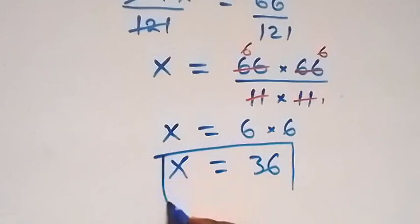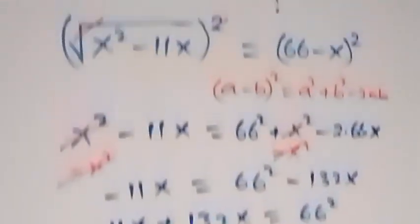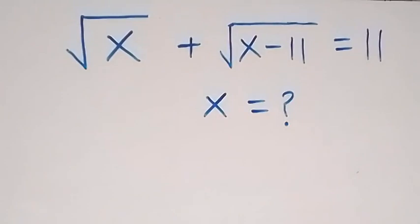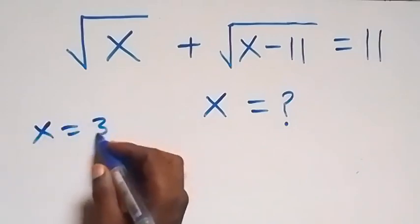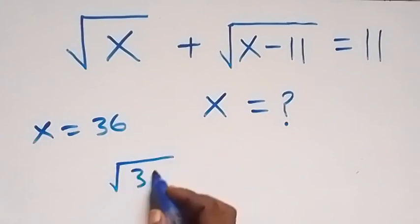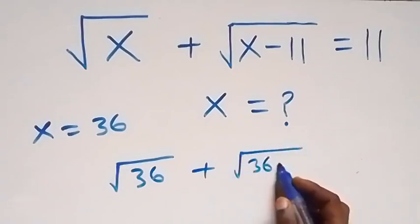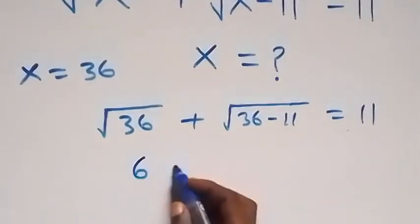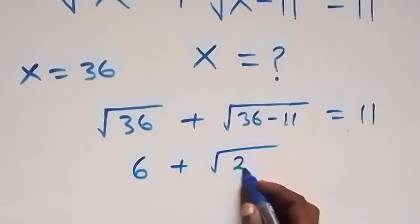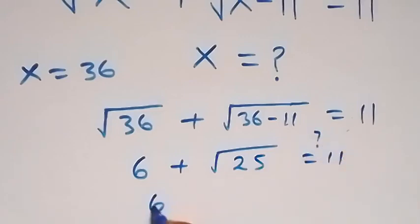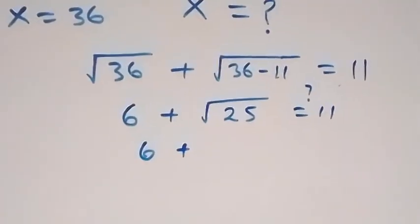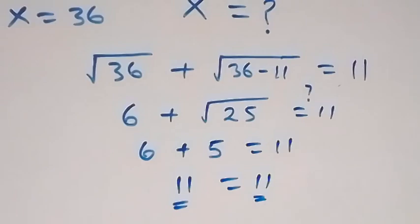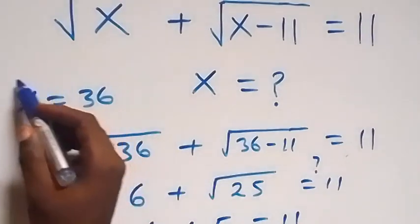Now we have the value of x for this given problem. Then we can check from what is given quickly to see if this satisfies the given problem. Since we got x equals to 36, we have square root of 36 plus square root of 36 minus 11. That gives us 6 plus square root of 25, which is 6 plus 5, equals to 11. Left hand side equals to right hand side, confirming x equals to 36 satisfies this given problem.